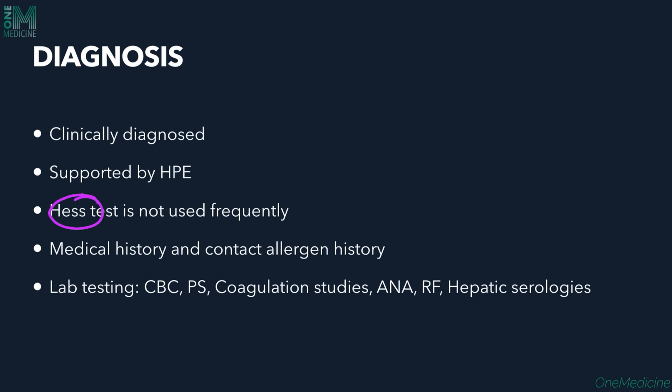Diagnosis is mostly clinical, supported by histopathology. The Hess test uses a sphygmomanometer cuff inflated between systolic and diastolic blood pressure for 10 minutes; more than 5–10 bleeding spots in a 10 cm² area is positive. Drug history and contact allergen history are important. Lab investigations include CBC with peripheral smear, coagulation studies, ANA profile, rheumatoid factor, and hepatic serologies.